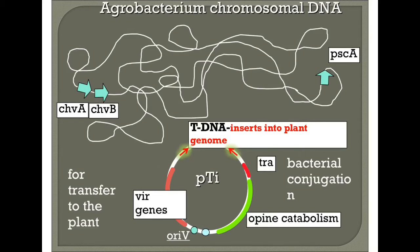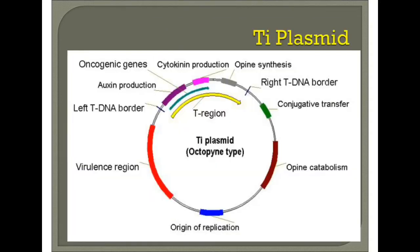There are genes from the genomic DNA that bind the bacteria to the cell surface, in the form of CHV A and B and polysaccharide synthesis. T-DNA inserts into the plant genome. The VIR genes make nicks at the right and left borders of the T-DNA. There is also an origin of replication. This is the overall Ti plasmid structure.